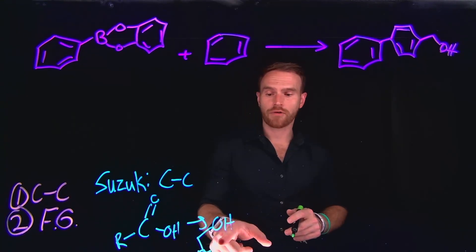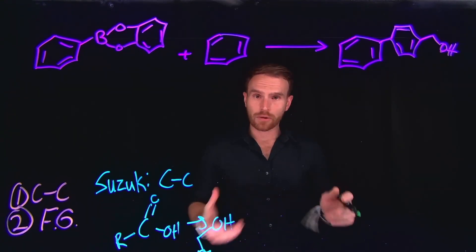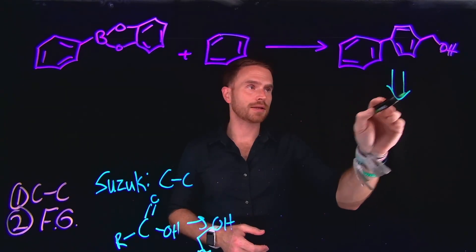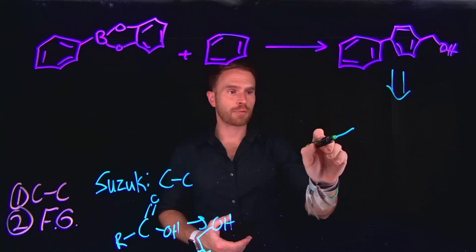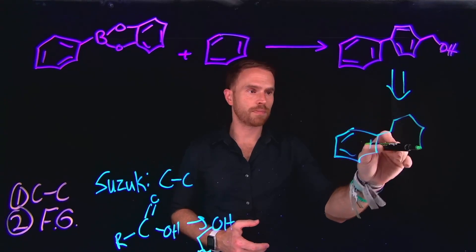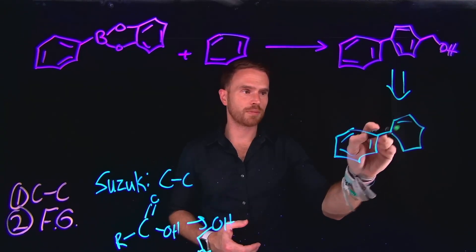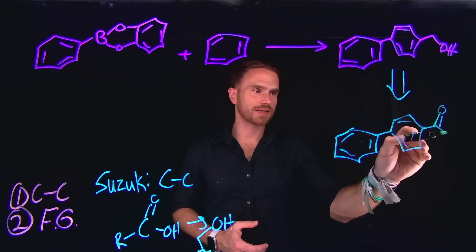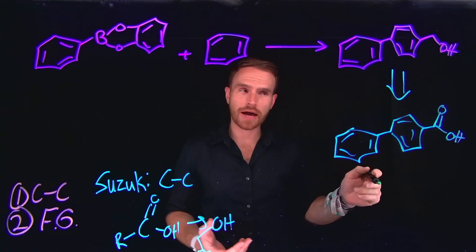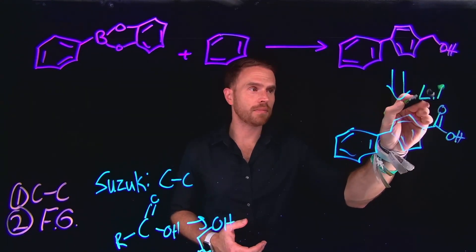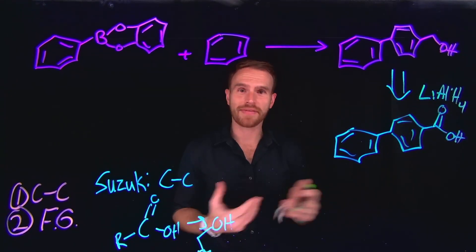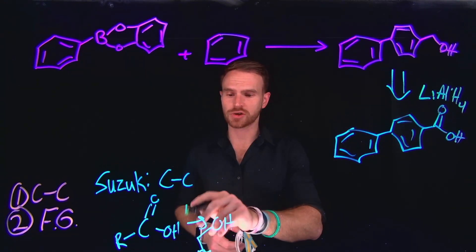So now we've identified some carbon-carbon bond forming reactions and some of our functional group transformations. Importantly, we need to start at the end for our retrosynthetic analysis. It's likely that in order to do this functional group transformation, the previous starting material must have been a carboxylic acid, which means my new carbon-carbon bond that adjoins the two aryl groups must have already formed. I know that I can turn carboxylic acids into primary alcohols using lithium aluminum hydride, or LAH, and this is going to allow us to do this functional group transformation.